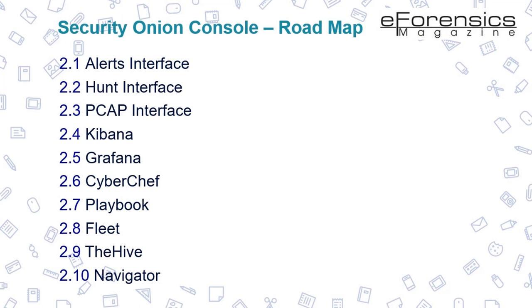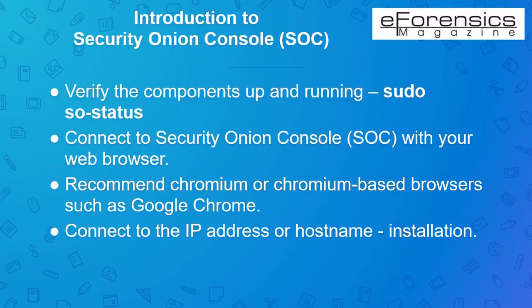In this section, you will learn what Security Onion Console is used for. There is also a quick action bar that includes actions such as viewing alerts on the Alert Interface, filtering the hunt query, pivot to PCAP, create an alert in The Hive, Google search for the value, and analyze the value on VirusTotal.com. After completing installation and logging into the SO account, you need to verify whether all components are up and running using the command sudo status.